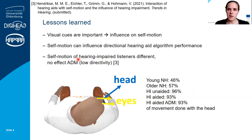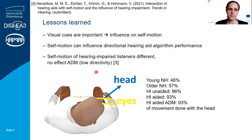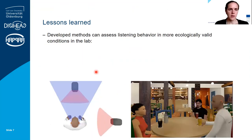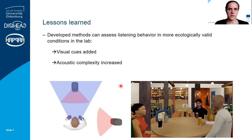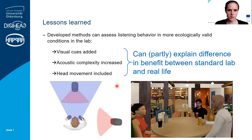We have to note that the adaptive differential microphone has quite low directivity, and the benefit it provided in the virtual environments was also quite low. For algorithms with higher directivity, we do expect them to have an effect on self-motion. We showed that with the developed methods, we can assess listening behavior in more ecologically valid conditions in the lab by adding visual cues, increasing acoustic complexity, and including head movement. This can at least partly explain the difference in benefits found in the literature between standard lab situations and real life.